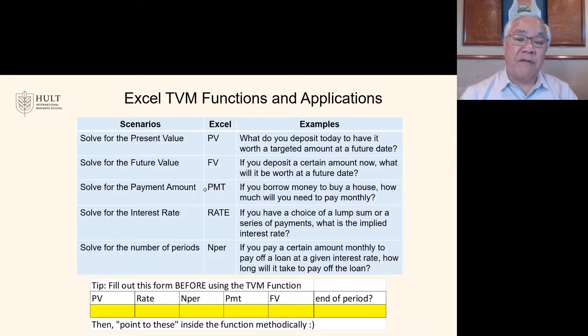And then the other is solve for the number of periods. If you pay a certain amount per month to pay off a loan at a certain interest rate, how long will it take you to pay off the loan? So you see that in general, the parameters are very similar. It's just that we scramble them in different orders because we're solving for different factors in the formula.